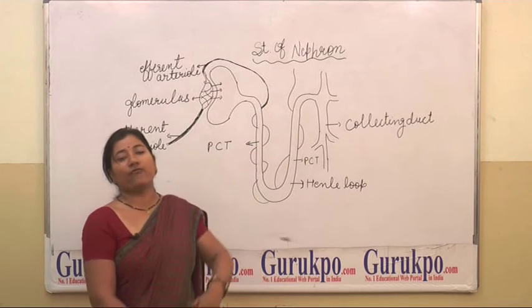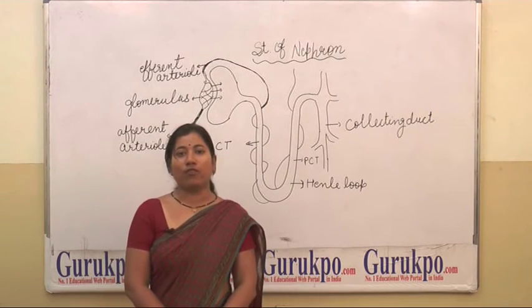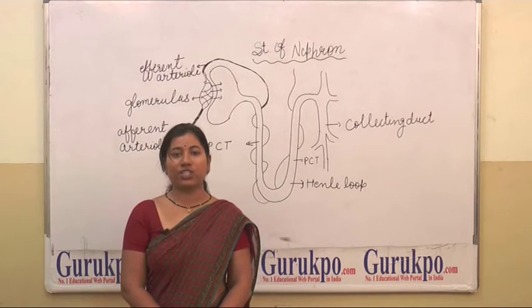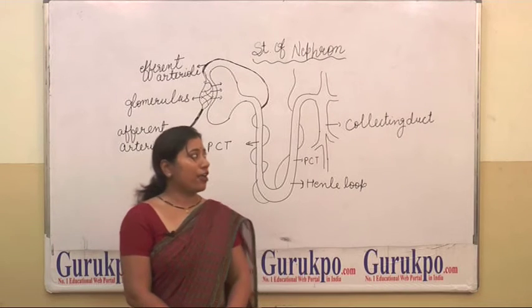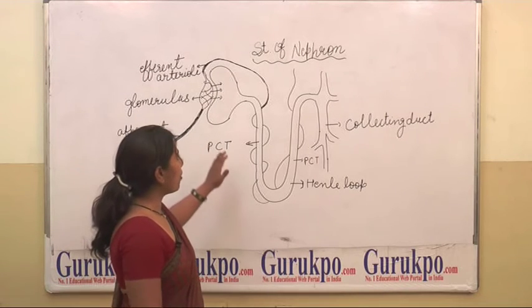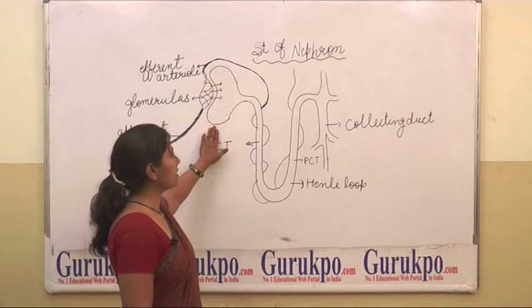Nephron is a structural and functional unit of our kidney. Each kidney contains 1 million nephrons. Nephron is made up of two parts.